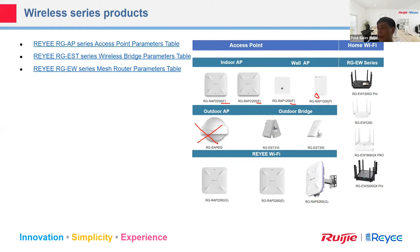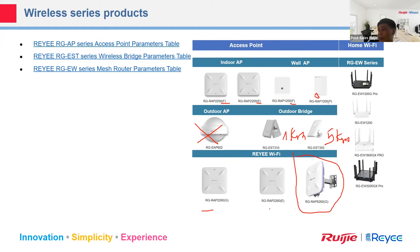For the outdoor bridge, we have two models: ESP310 and ESP350. ESP350 supports five kilometers and ESP310 supports one kilometer. For indoor Wi-Fi 6, we have two models: 2260G and 2260E. What's the difference? 2260E supports a 2.5G port, but 2260G only supports one 1G port. You can use the specification for tender documents for projects.